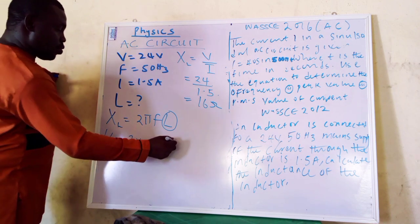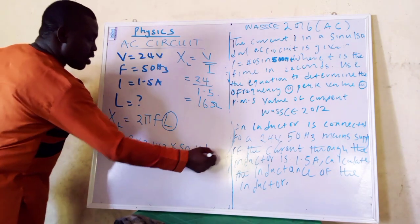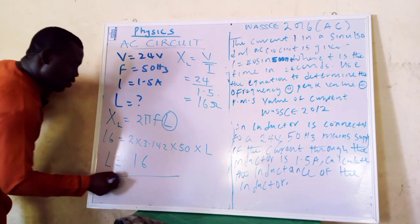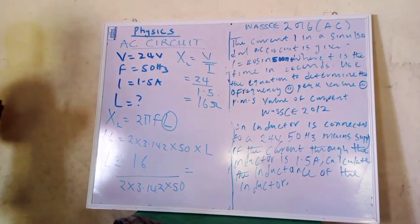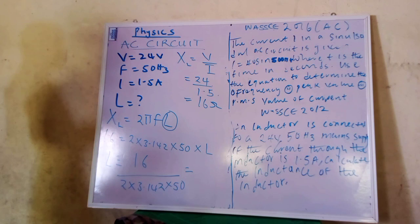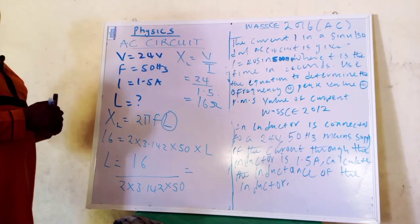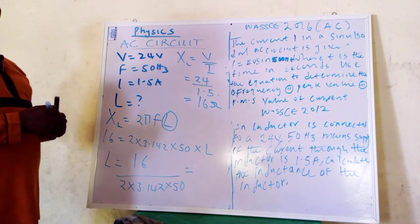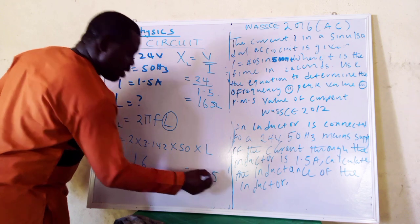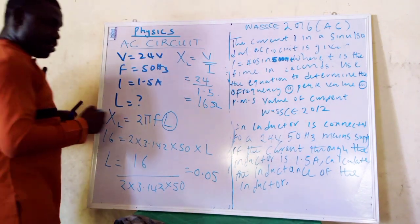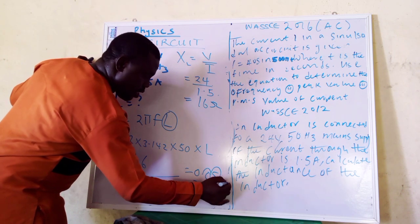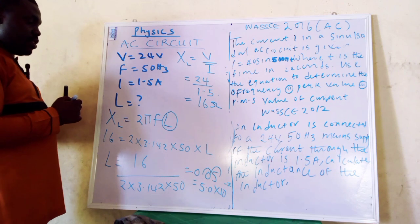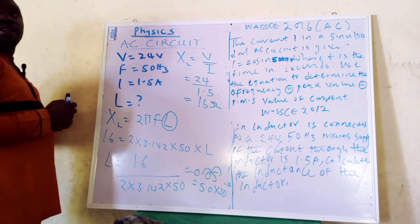2 times 3.142, 50 times L. What is that? 0.05. Okay, 0.05 as in like this. Are you sure? What would be the unit? Which symbol would I use? H. Thank you.